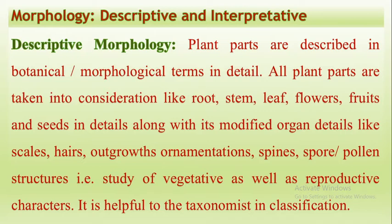These are studied in detail along with their modified organs. For example, if we consider the stem, the normal stem gets modified into different types: it may be a tuber, it may be a stolon, it may be an offset — which you have already studied in 12th class. Or it may be a rhizome. So the different types are tubers, offset, stolon, rhizome, and bulb. For example, rhizome is found in ginger, bulb is in onion, and neprolepies — it is stolon.